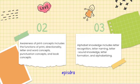Number three: alphabet knowledge includes letter recognition, letter naming, letter-sound correspondence, letter formation, and alphabetizing.